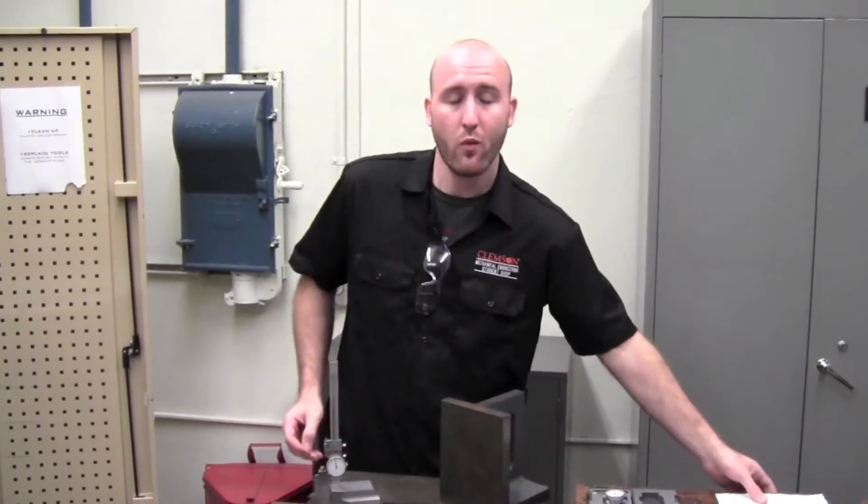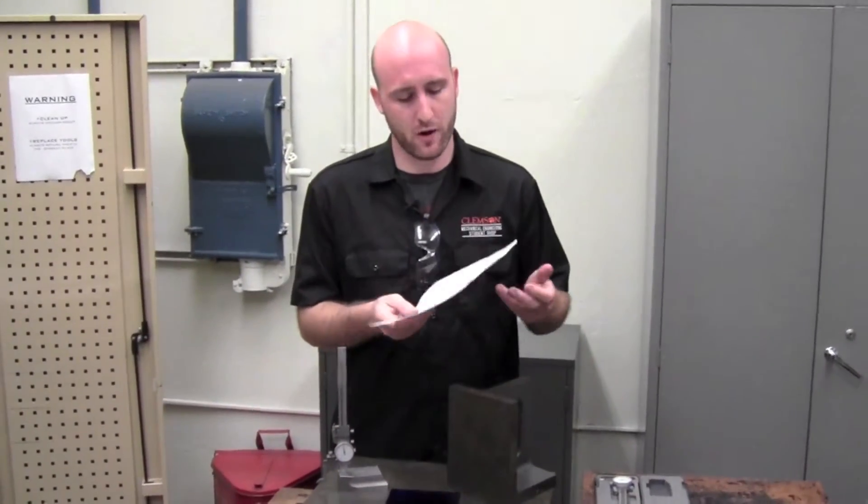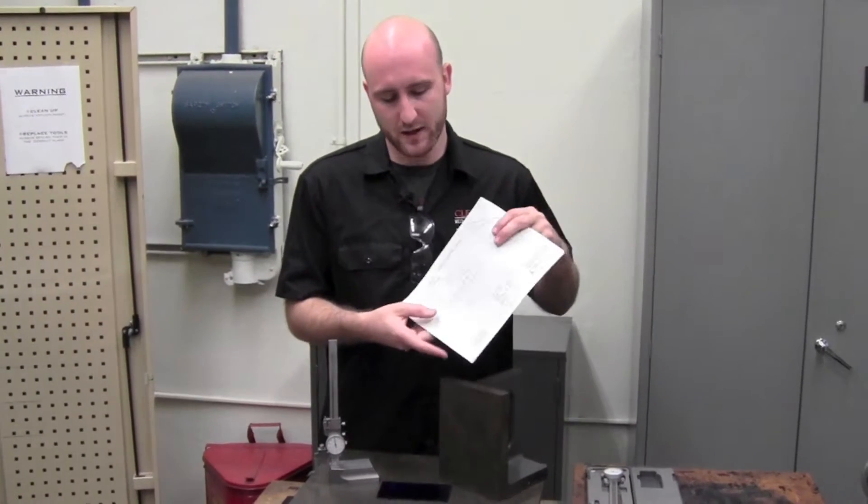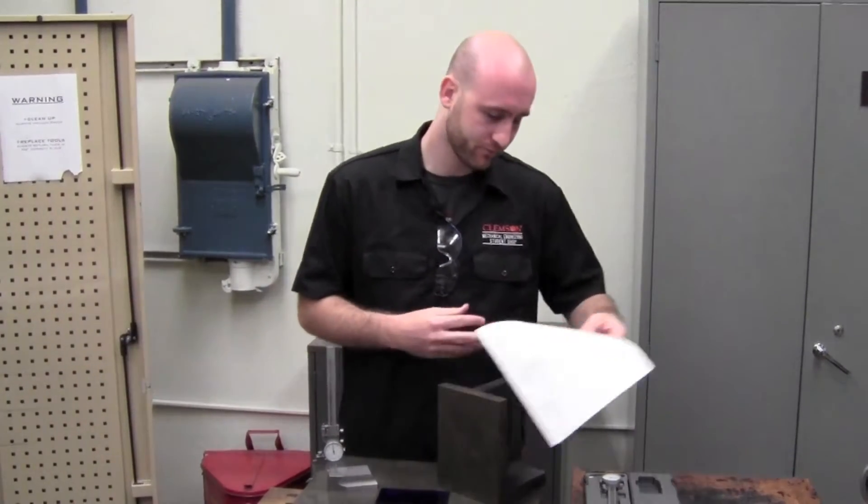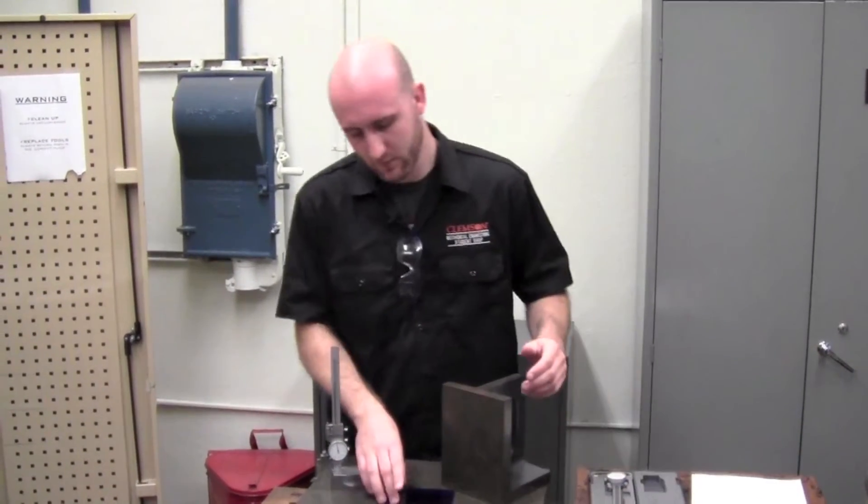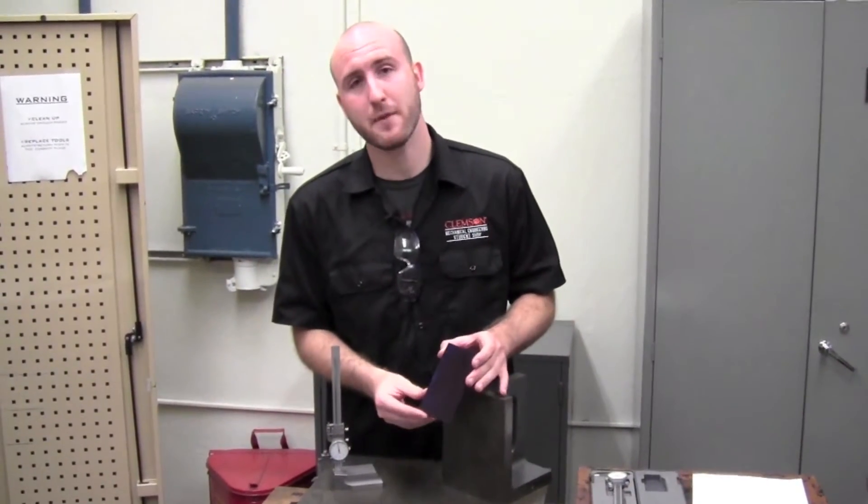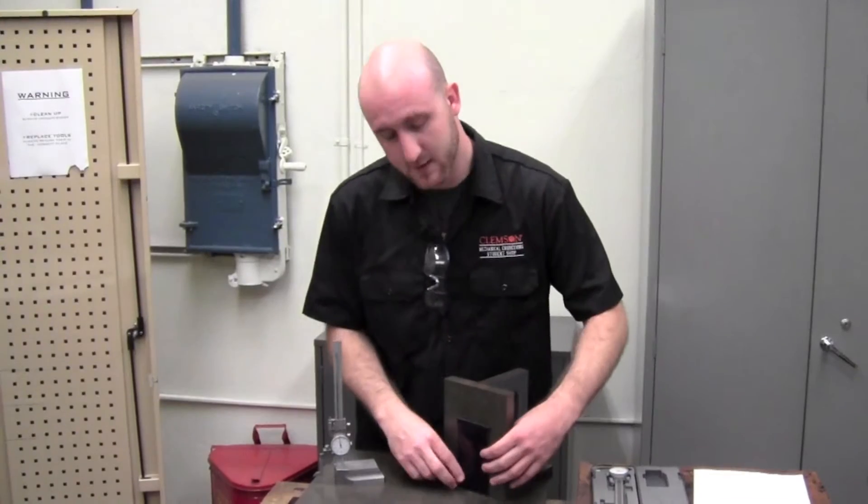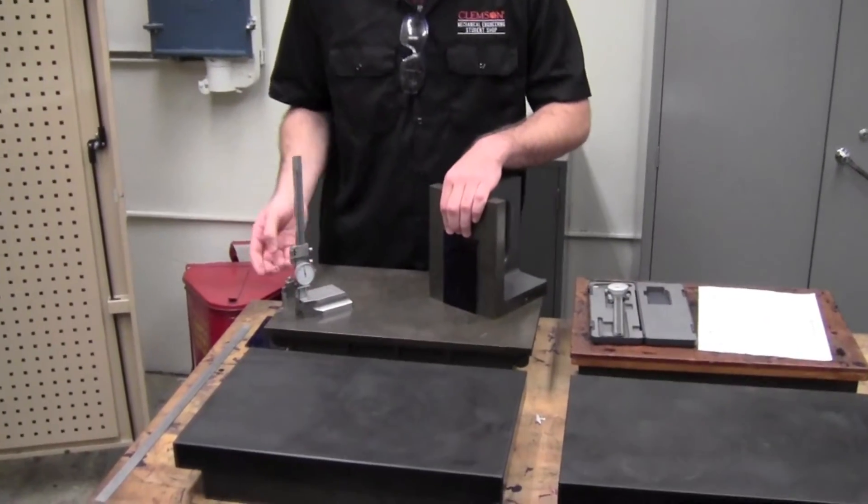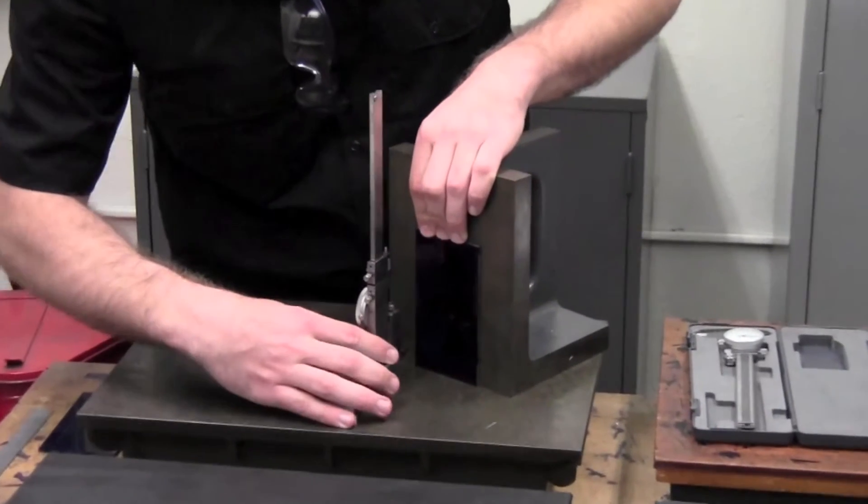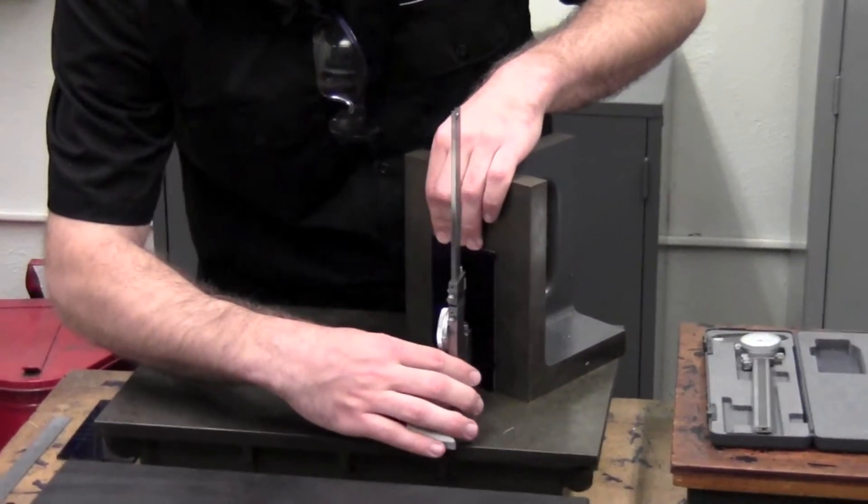I've already set our height gauge to a half inch, which is one of the first measurements for our part. It will give us one of the center lines for these three holes you can see here. I'm going to take my piece and place it against this 90 degree angle block and then take my scribe, which has already been set, and scrape it across the front of the piece.